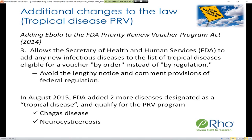The last notable change to the law allows the FDA to add any new infectious diseases to the list of tropical diseases eligible for a voucher by order instead of by regulation. This prevents the lengthy notice-and-comment provisions that come with regulatory changes. During the Ebola outbreak it took almost an entire year for Ebola to be added, which highlighted the need to change the process.